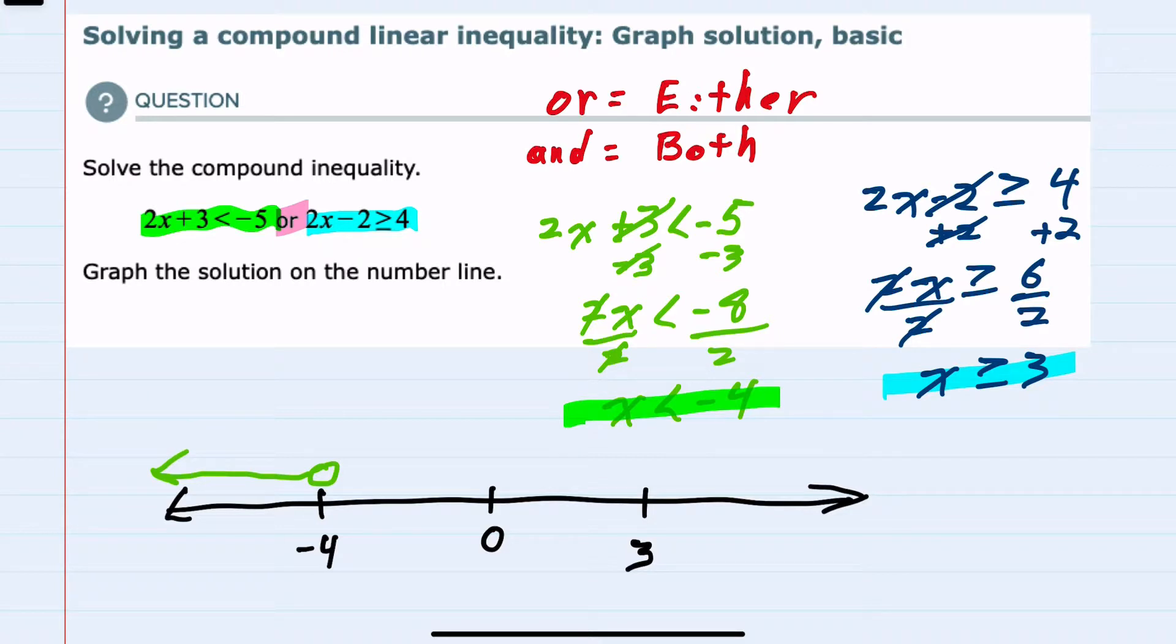And then for the right-hand inequality, that says that x is greater than or equal to 3. So this is a solid point. Greater than means going to the right.